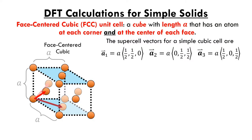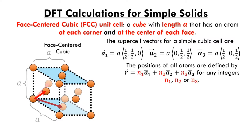The supercell vectors that describe a cell with an FCC structure have the following form: A1 is equal to the lattice constant times (1/2, 1/2, 0), A2 is equal to the lattice constant times (0, 1/2, 1/2), and A3 is equal to the lattice constant times (1/2, 0, 1/2). Through a linear combination of these supercell vectors, we can describe every possible atomic position in the crystal.